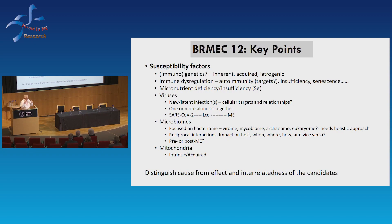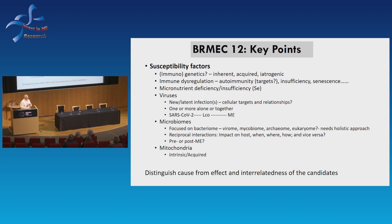Susceptibility factors — I've called these risk factors — and what we've heard from many talks over the past couple of days is that there are numerous of them. Immunogenetics: we've had talks about the possibility of some genes related to ME that regulate the immune system. These could be inherent, acquired, or iatrogenic — so in response to an intervention. Immune dysregulation is very topical, and I think this is probably at the core of ME.